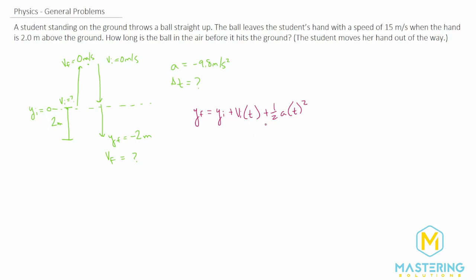I'm going to rearrange this, and we can simplify y initial as zero. We said it was y equals zero over here. Let's subtract y final to this side of the equation. What we'll have is zero equals one half a times t squared plus v initial times t minus y final.